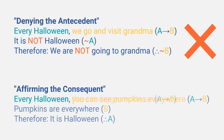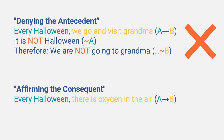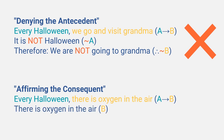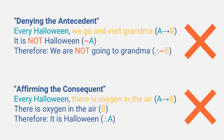As for example 3 — affirming the consequent — let's try this: 'Whenever it is Halloween, there is oxygen in the air.' Keep in mind that this is absolutely true; there is nothing false or invalid about this statement. Now the minor premise, affirming the consequent: 'There is oxygen in the air.' That's great, there should be oxygen in the air. But then the conclusion would be: therefore it is Halloween. And that's just really silly — not because the two premises were wrong, but because the form of the argument is wrong.